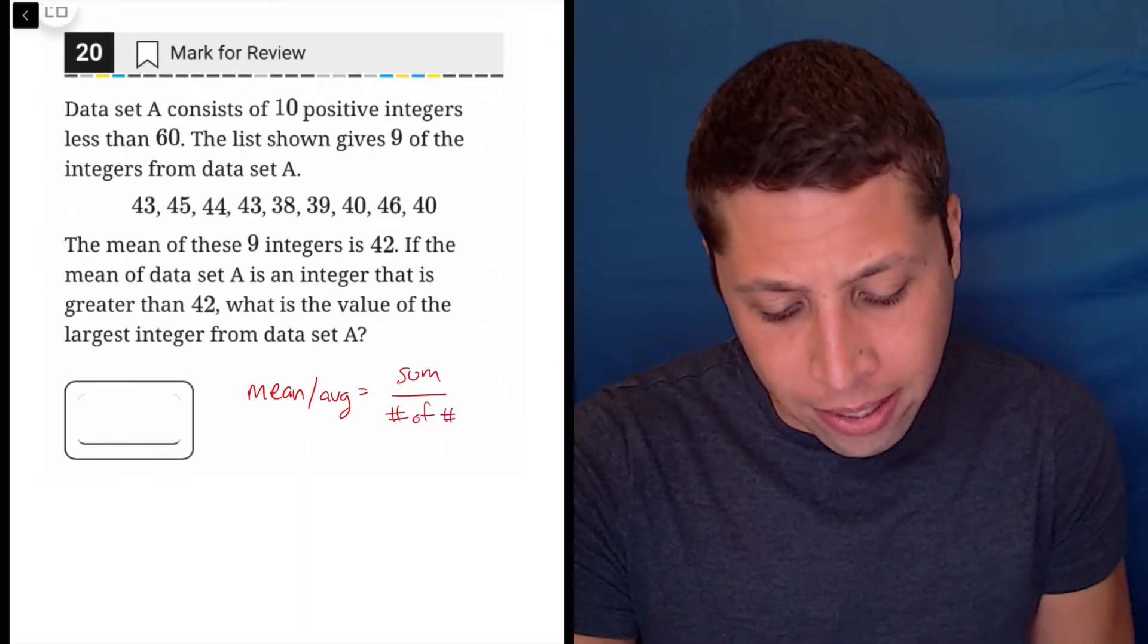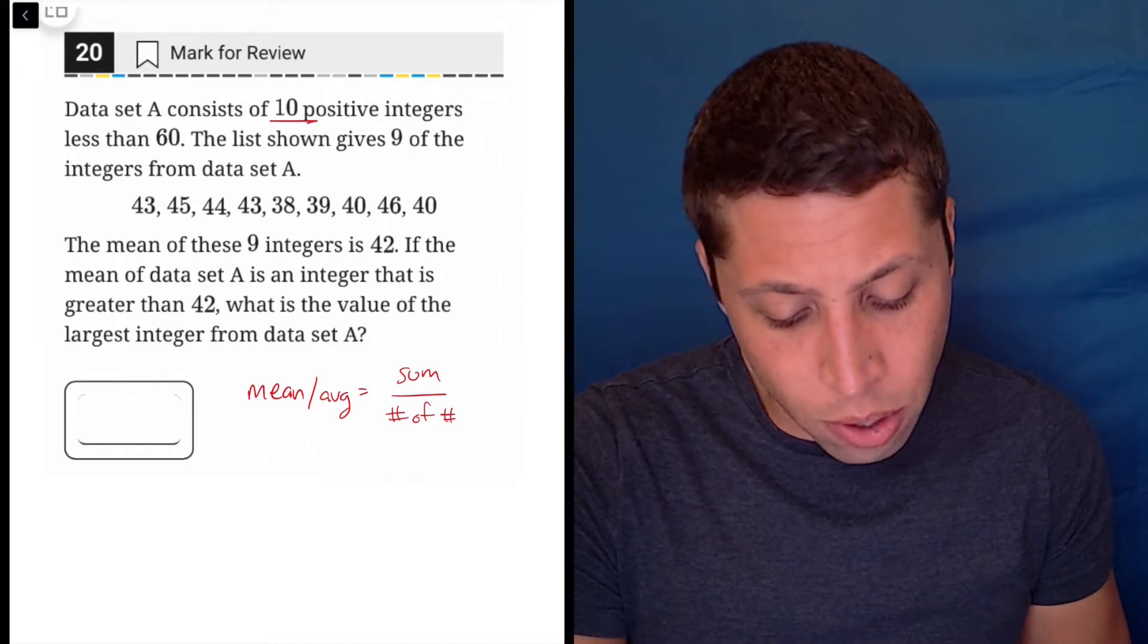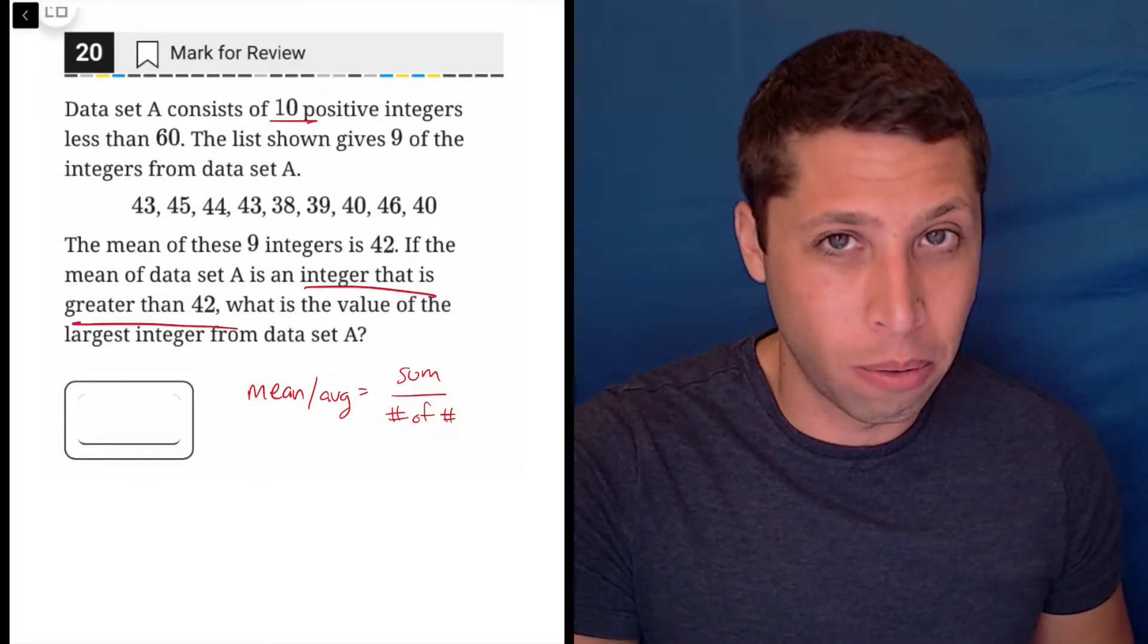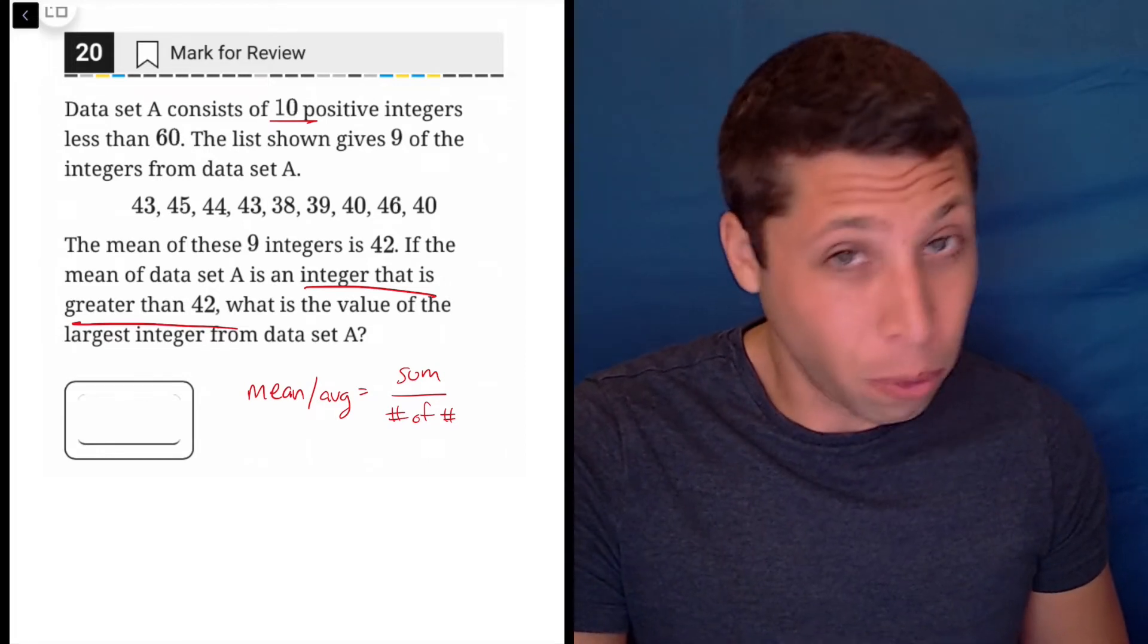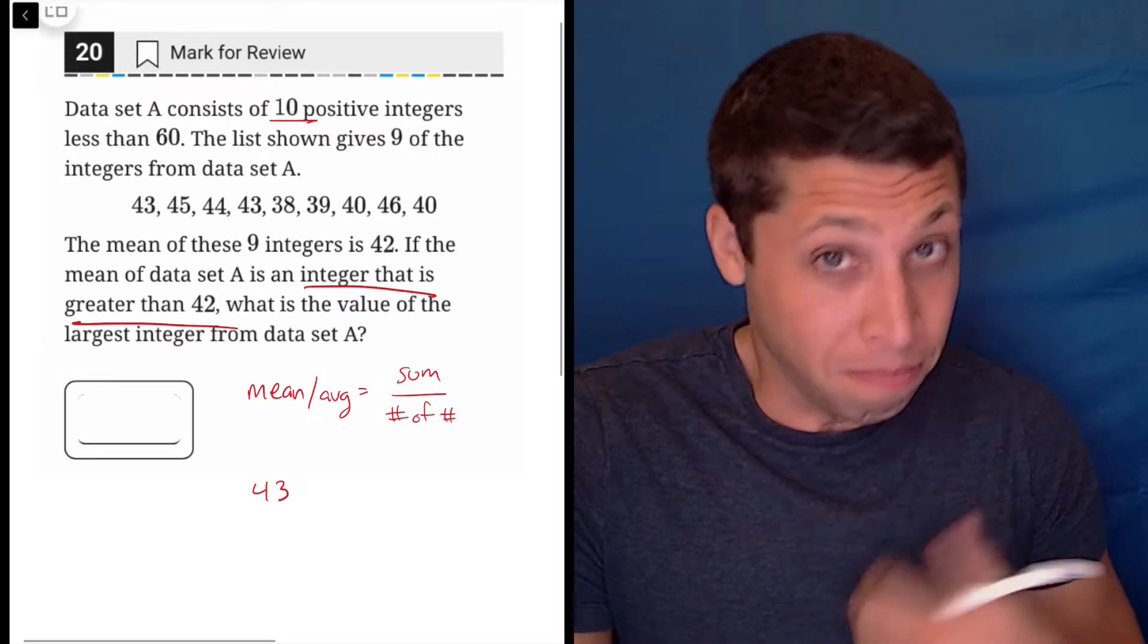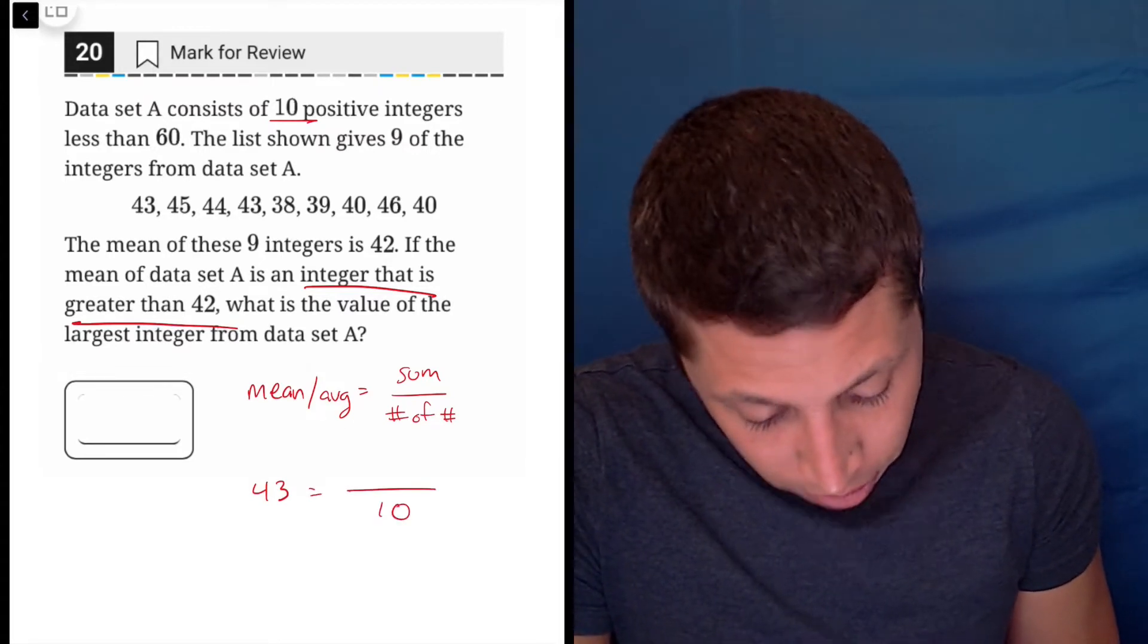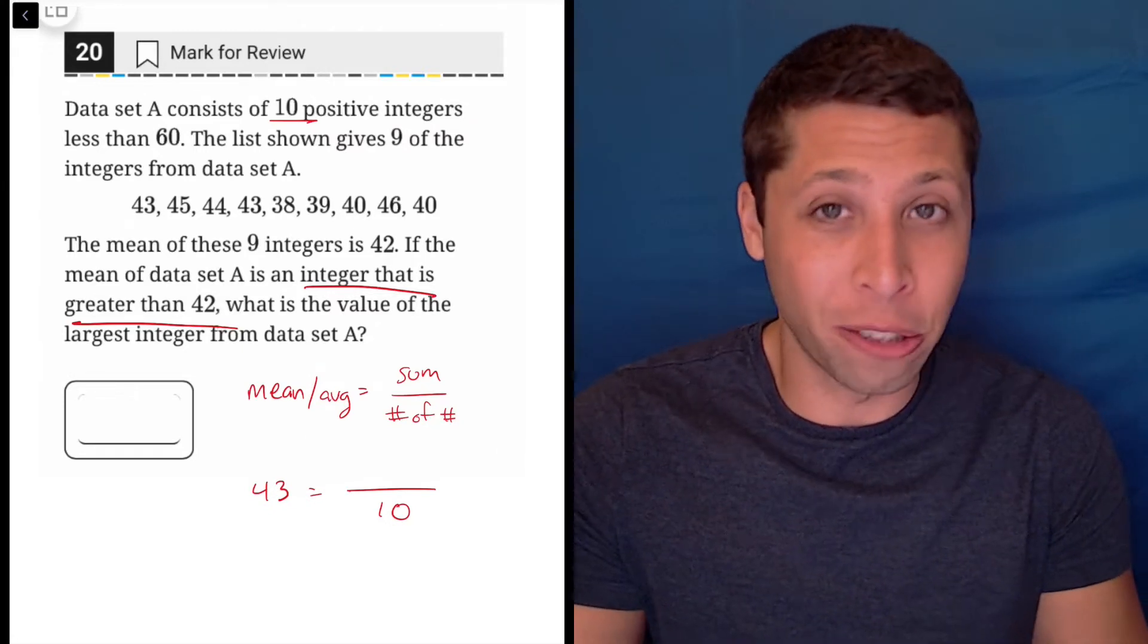So they're talking about a set of 10 integers and we don't know the average other than that it's an integer that's greater than 42. Well what's an integer that's greater than 42? How about 43? So 43 is a good assumption for the average. We know that there are 10 of these integers within the set.